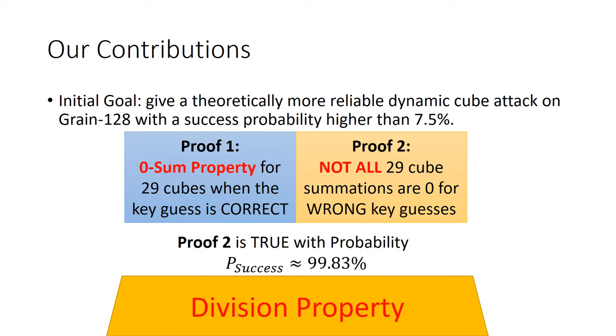Therefore, it is unknown whether proof 2 is true or whether Dinur's attack is available. Even if proof 2 were to be true, the success probability of Dinur's attack should still be 7.5%, which is quite low. Faced with this situation, our initial goal is to give a theoretically more reliable dynamic cube attack on Grain-128 with higher success probabilities. To be more specific, our new dynamic cube attack guarantees all 29 cube summations to be constant zero when the key guess is correct. For wrong key guesses, we only ask that not all cube summations are zero. Under certain assumptions, we show that proof 2 is true with probability about 99.83%. The theoretic tool we use is the division property, a powerful tool for deducing theoretically available cube attacks.